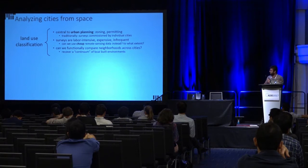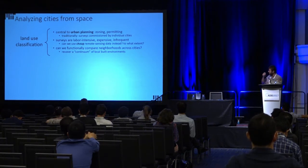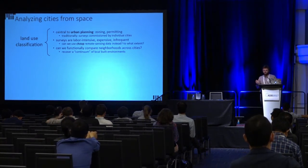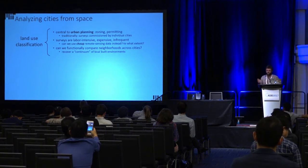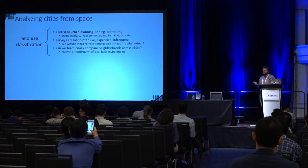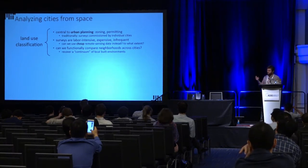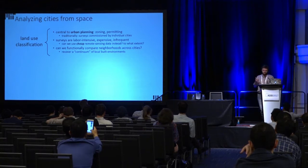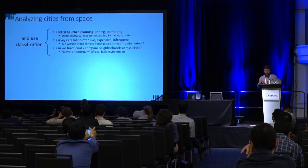This problem is also known as land use classification — a time-honored problem studied for decades, with a lot of interest in the remote sensing, geography, and urban planning communities. Applications are numerous, including zoning, permitting, and construction. Traditionally this is done by cities commissioning large-scale surveys, which are labor-intensive, expensive, time-consuming, and require expert labor. A key question we asked was: how do you do this without those resources — in a cheap, automated way — and what is the quality of the product that comes out?